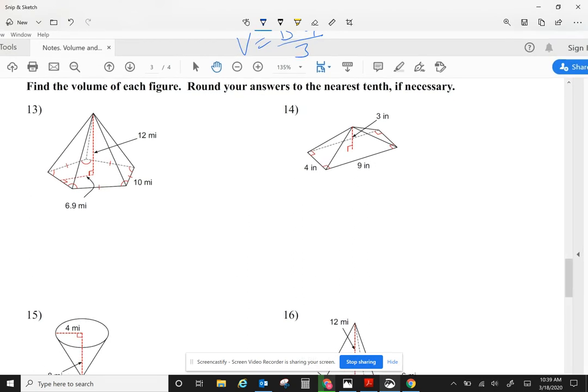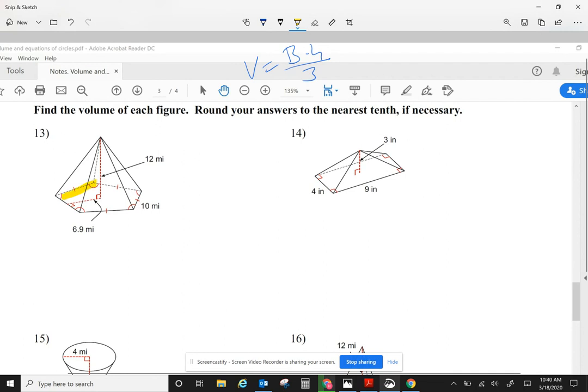So let me get the area of the base. The base in this case is a polygon. I know I have to go apothem times perimeter divided by two. So I have to go 6.9. Each side is 10. There's five sides divided by two. So when I use my calculator, I get that the area of the base is 172.5.